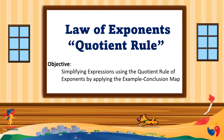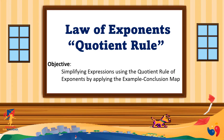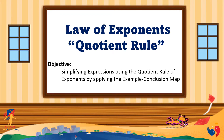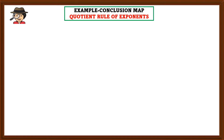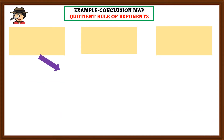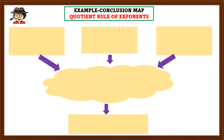Our objective is simplifying expressions using the quotient rule of exponents by applying the example-conclusion map. When we talk about the example-conclusion map, I have here three boxes, a cloud, and another box.